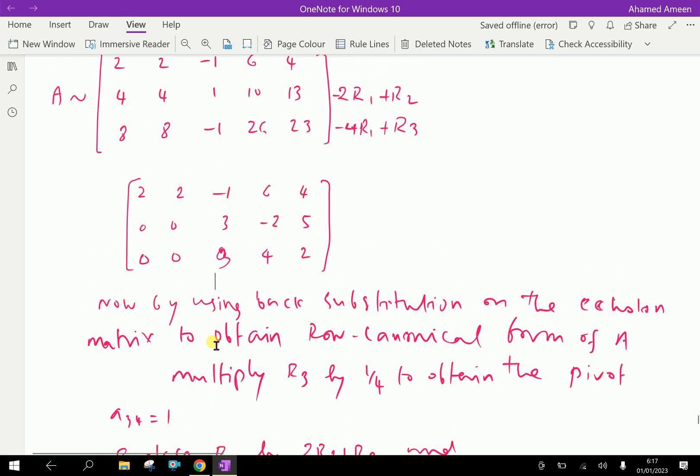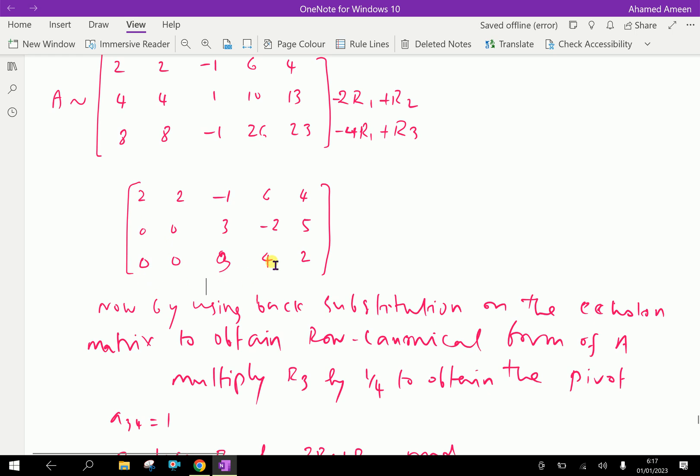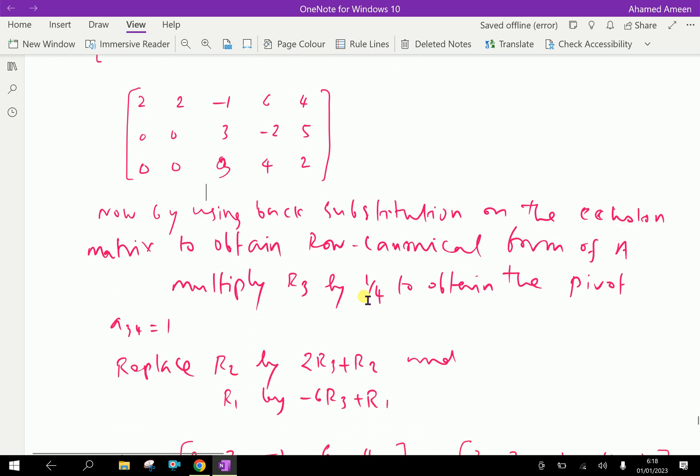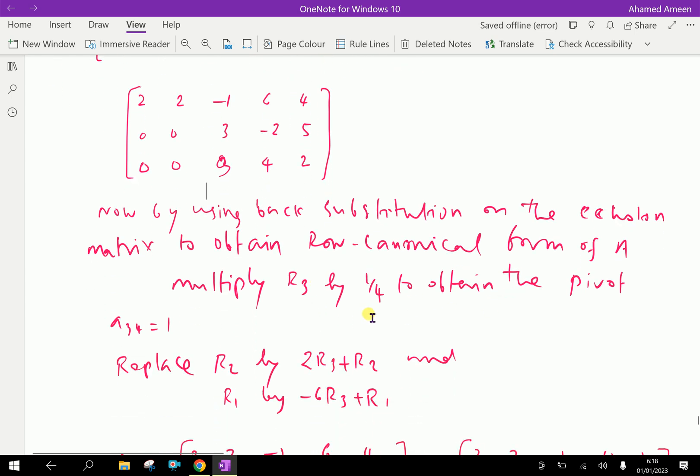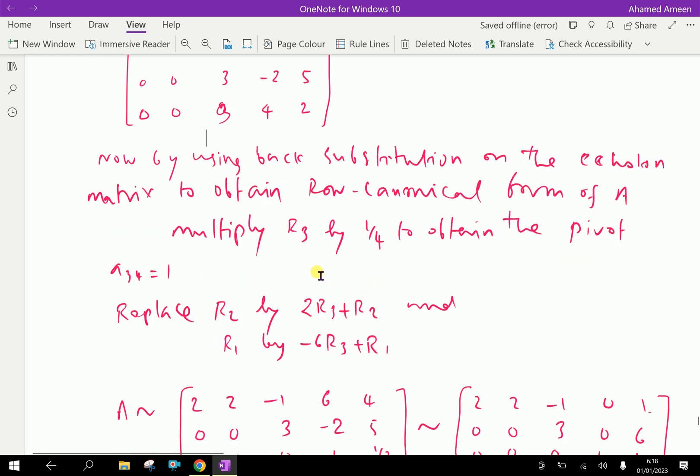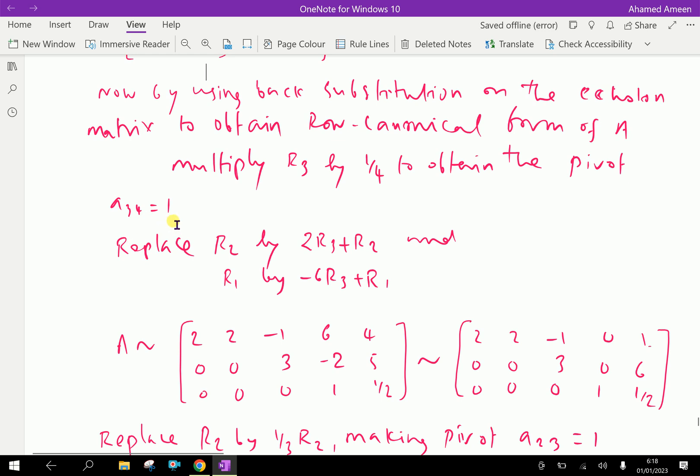Here a34, to get 4 as 1, we have to do this operation. If you multiply R3 by 1 by 4 we can get a34 equal to 1. Replace R2 by 2R3 plus R2, and R1 by minus 6R3 plus R1.